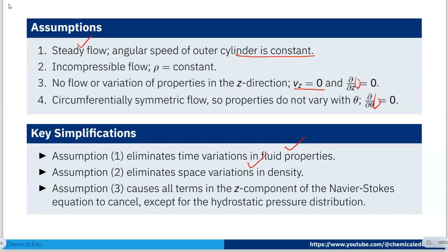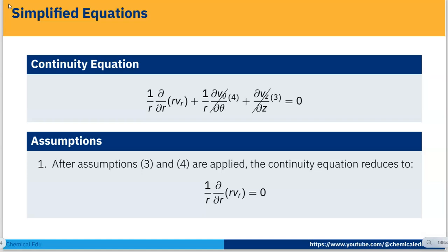Assumption one eliminates time variation in fluid properties. Assumption two eliminates spatial variation in density. Assumption three means no flow variation in z, so all terms in the z-component of the Navier-Stokes equation vanish except for the hydrostatic pressure distribution. Applying these to the continuity equation, since ∂/∂θ = 0 and ∂/∂z = 0, we get (1/r) ∂/∂r(r·v_r) = 0, so ∂/∂r(r·v_r) = 0.